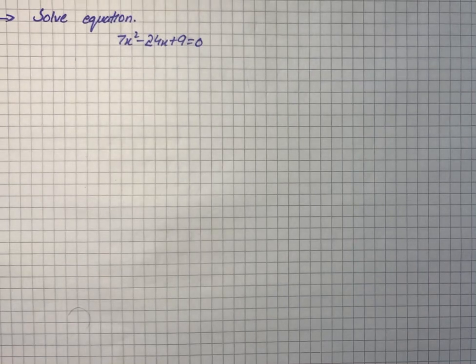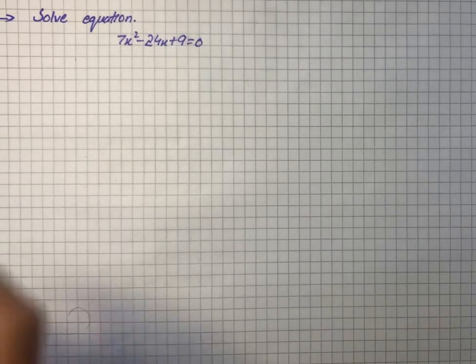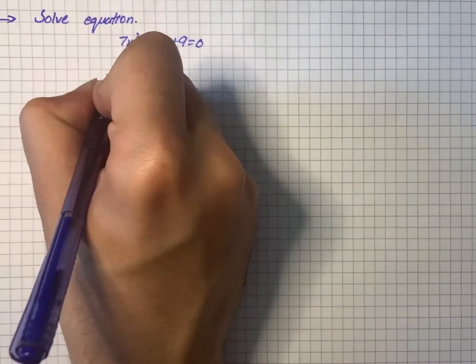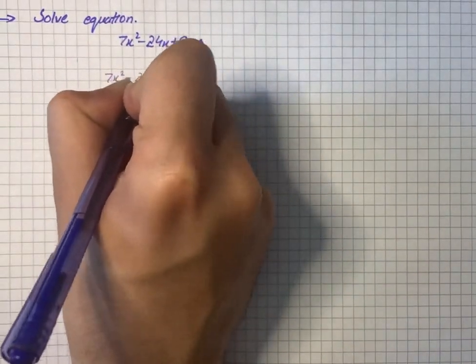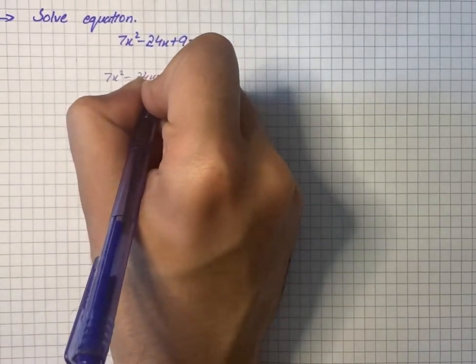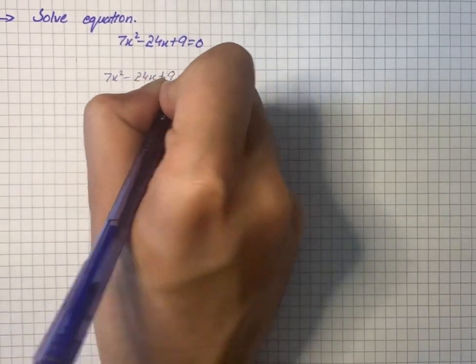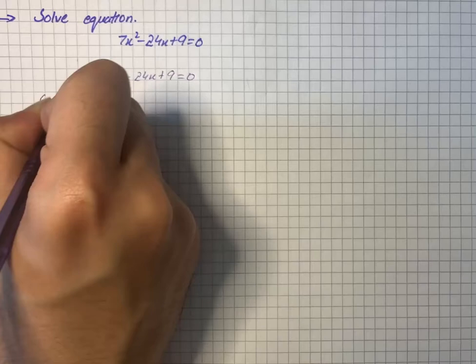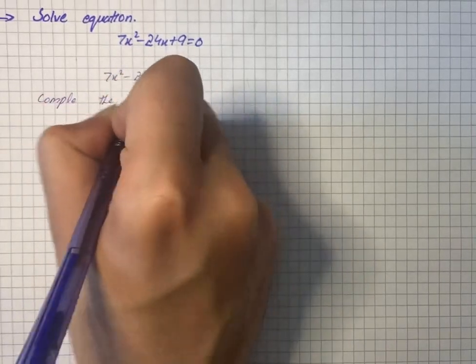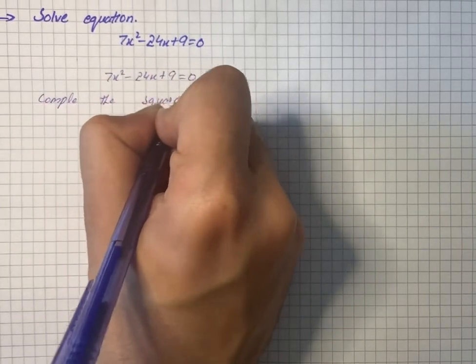Here we have an equation to solve. First, we will take the equation and rewrite it: 7x² - 24x + 9 = 0. Now we'll complete the square.